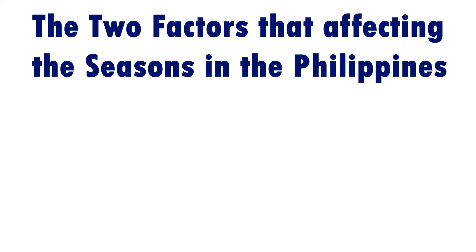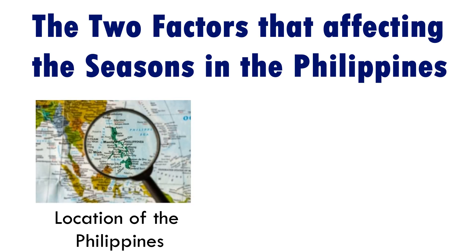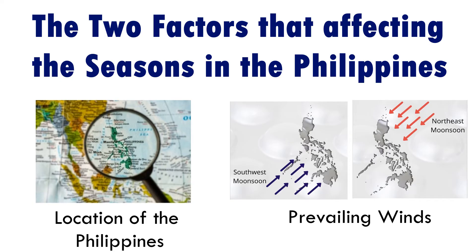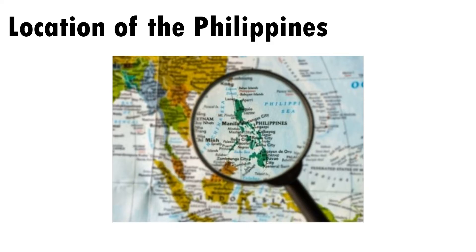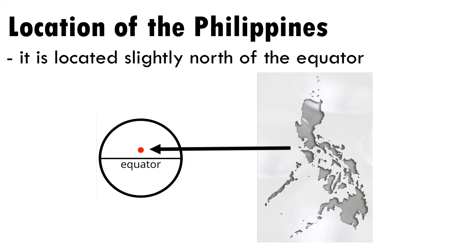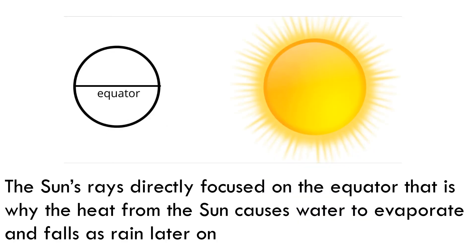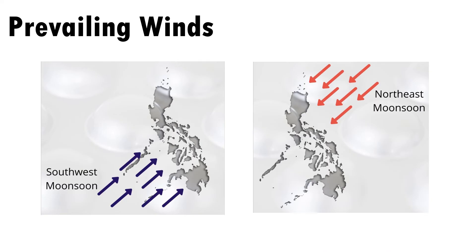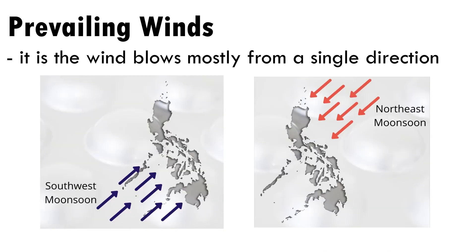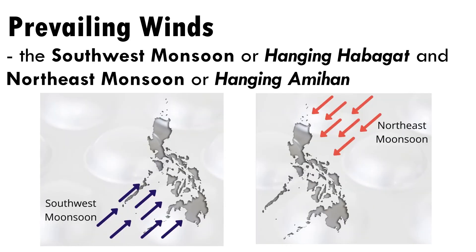The two factors affecting the seasons in the Philippines are the location of the Philippines and the prevailing winds. The Philippines is located slightly north of the equator, where the sun's rays directly focus, causing heat that evaporates water which later falls as rain. The prevailing winds blow mostly from a single direction: the southwest monsoon or hanging habagat and the northeast monsoon or hanging amihan.